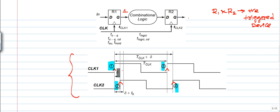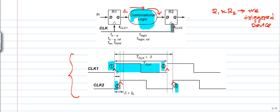The time TCLK is the time given to the combinational logic circuit to compute its output and deliver it to the input of R2. The combinational logic computes the digital data and it should be at the input of register R2 before R2 receives its next positive edge — point 4 — so that the computed data is transferred to the Q side.